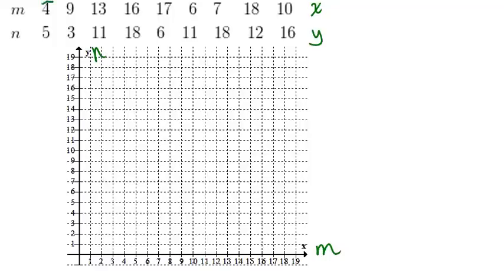So you'll start with 4, 5, so 4 is like your x coordinate, and 5 is your y coordinate, and plot the point. Then go over to 9, 3, and 13, 11, and keep going like this until you have plotted all your points.